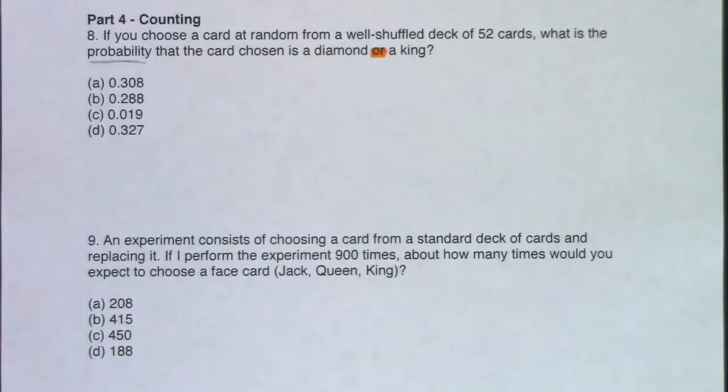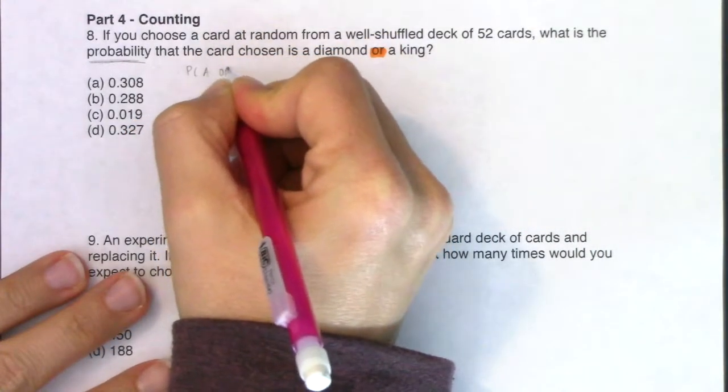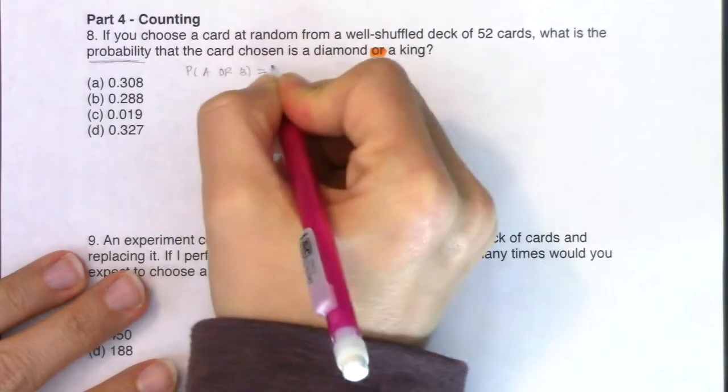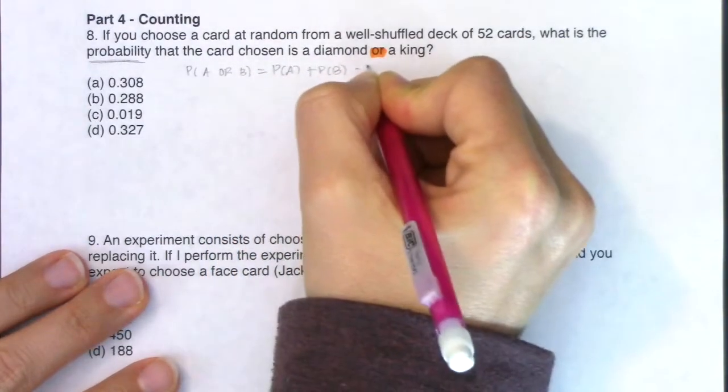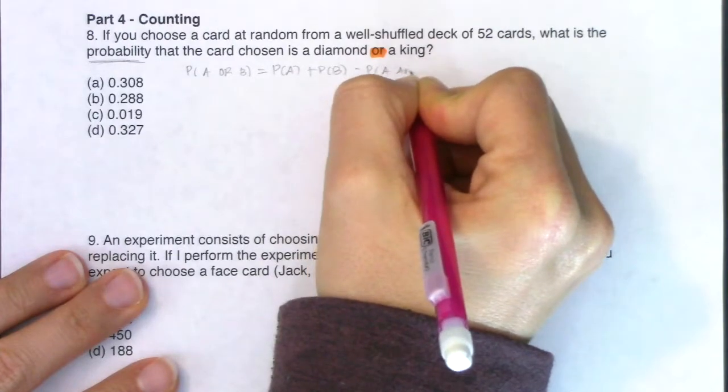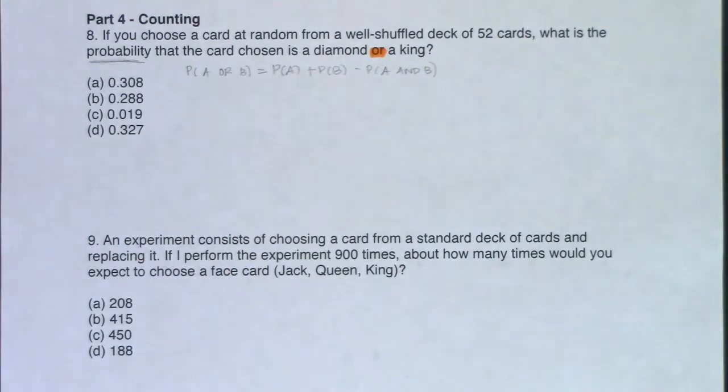So I think I've got an or formula. That was formula number one. Let me rewrite that here. So I've got the probability of A or B is the probability of A plus the probability of B minus the probability of A and B.